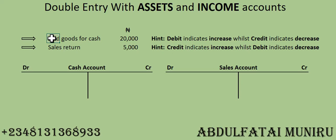We sold goods for cash for 20,000 Naira, so which account is giving and which account is receiving? Here's a hint: if you're having difficulty identifying the giver, start with the receiver. When you sold goods for cash, who is receiving? In the business, when you sell goods and receive money, your cash account is receiving. By identifying the account that is receiving, the second account is the one that is giving.